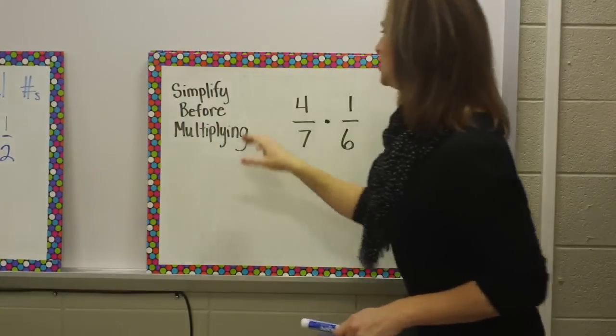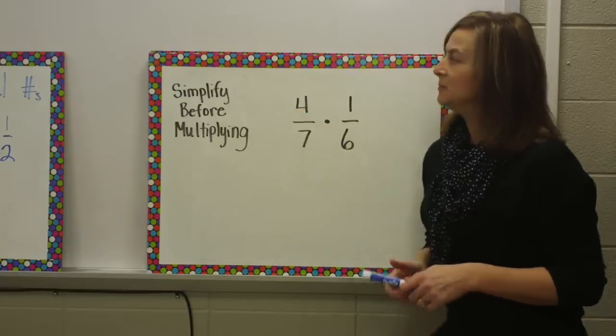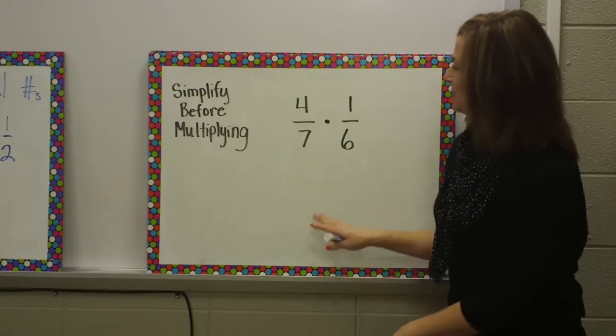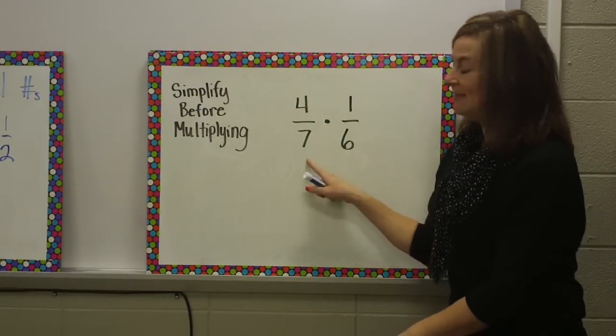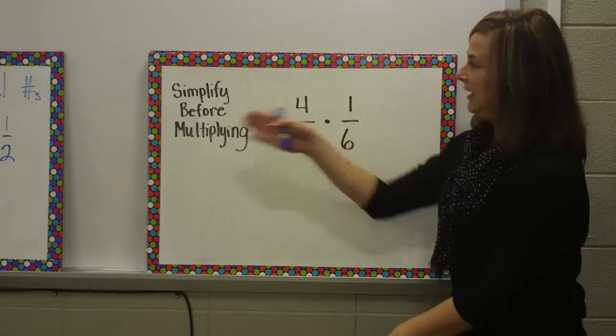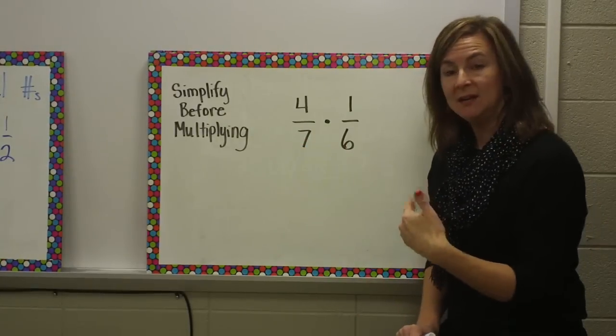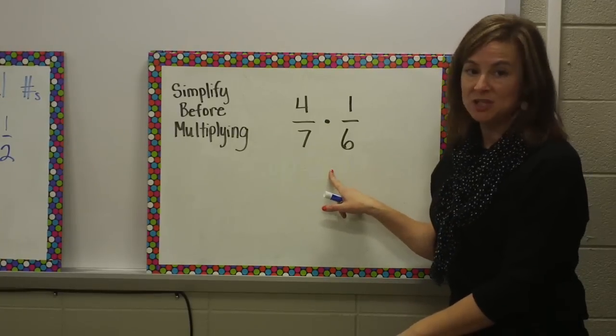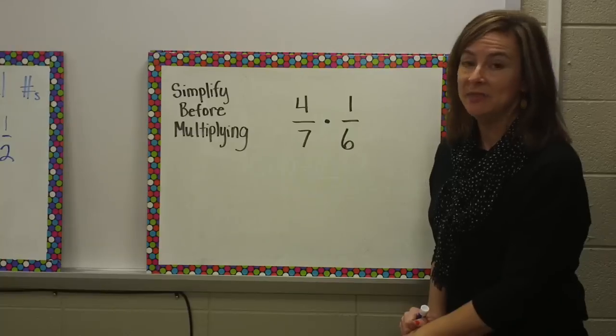On your notes page, please write down simplify before multiplying, and then put this example down. In this example, we have four-sevenths times one-sixth. In our first example, we multiplied and simplified in our answer. When you multiply fractions, you can simplify in the problem.